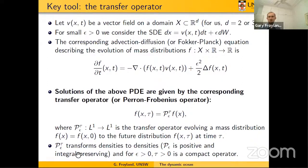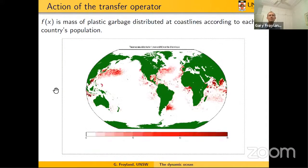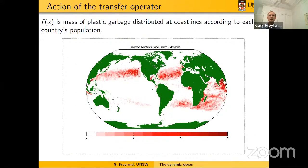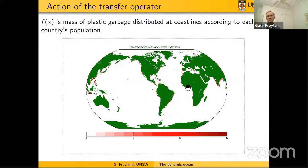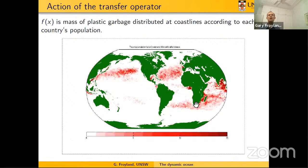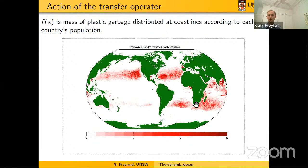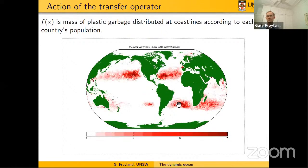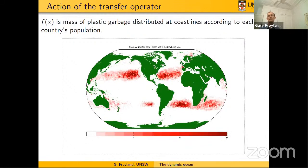Here is a virtual experiment where we initialized around the coastlines a distribution of synthetic plastic according to the population of each country, then let this float away according to the ocean currents. F is my initial distribution of the plastic, and what I'm doing is pushing it forward with the transfer operator over time. That plastic distribution changes — it's now mainly located in certain regions in the ocean. This illustrates what the transfer operator is doing: it's evolving densities forward in time.